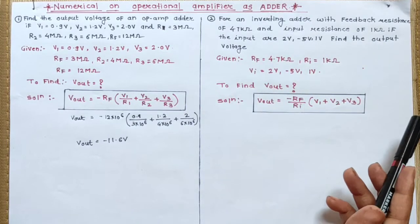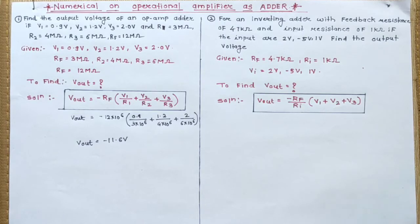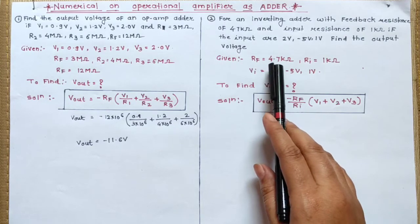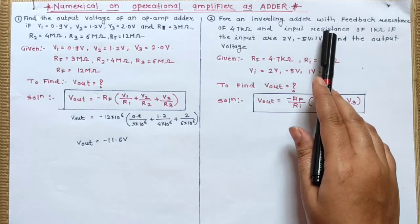Write down the given data. They are providing you the value of Rf, feedback resistance. It means Rf. What value is given? 4.7 kilo ohms.